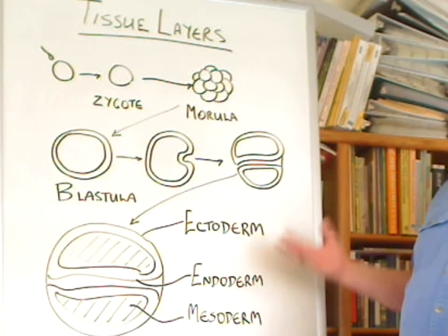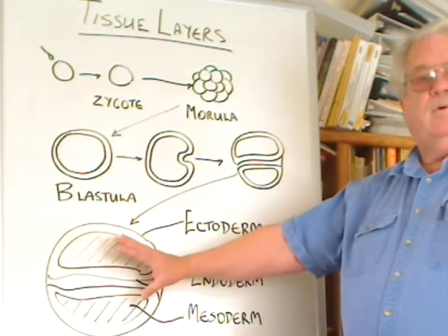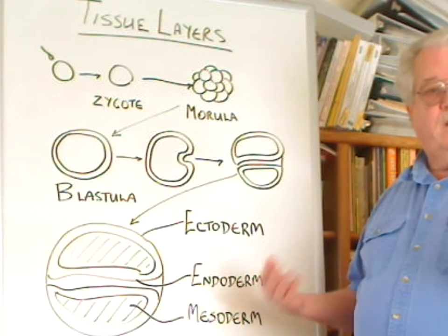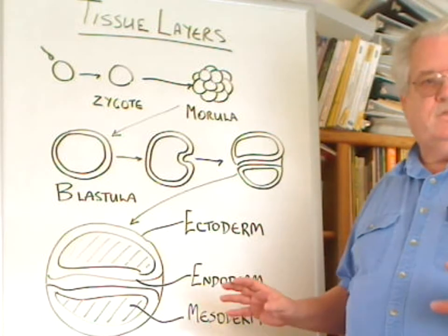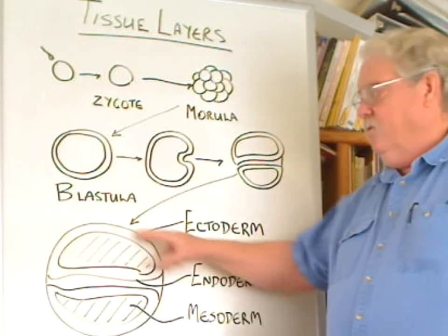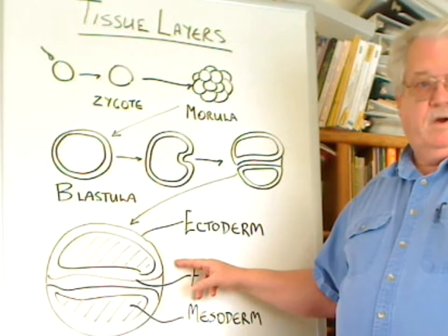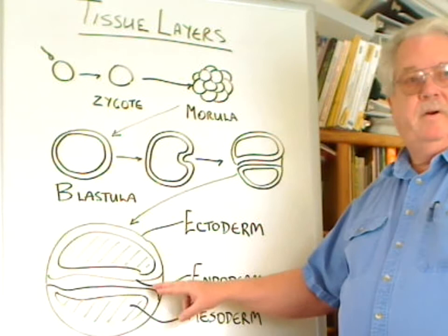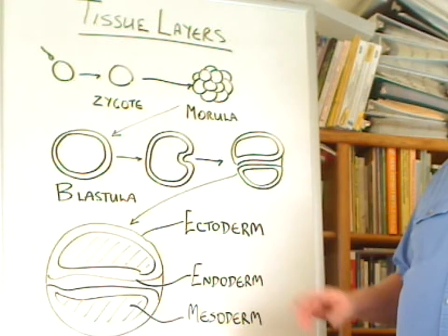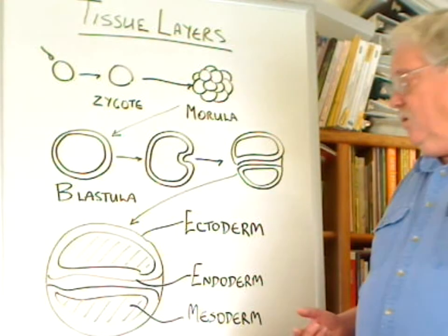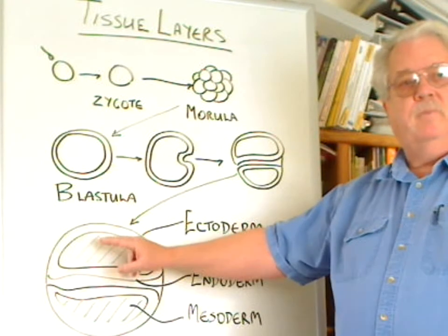At this point we have three kinds of major tissues, which will develop as the embryo grows into a young individual into different parts of the body. The ectoderm primarily becomes the skin and the nervous system. The endoderm primarily becomes the digestive system and associated structures — the lungs are an outgrowth of the endoderm. And the mesoderm becomes most of the body mass: muscles, bones, etc.